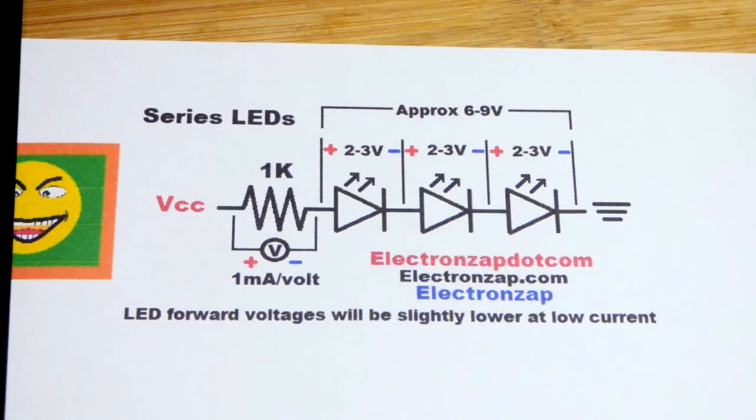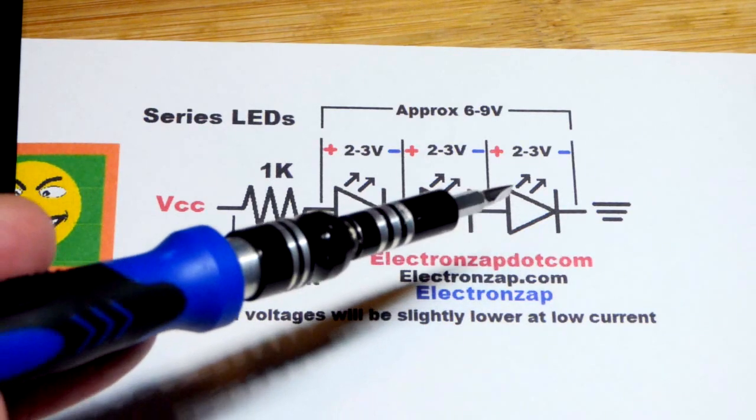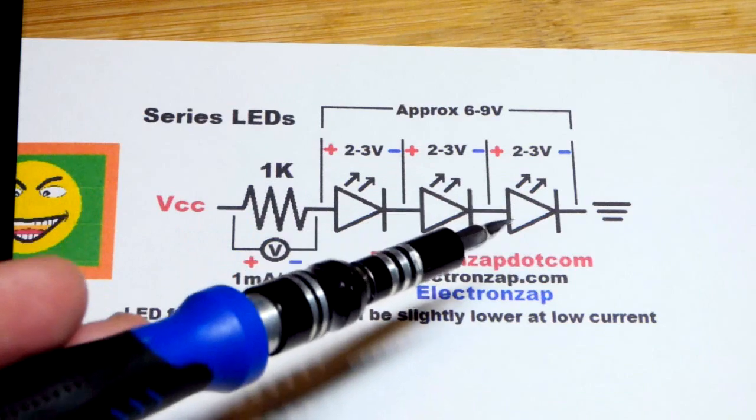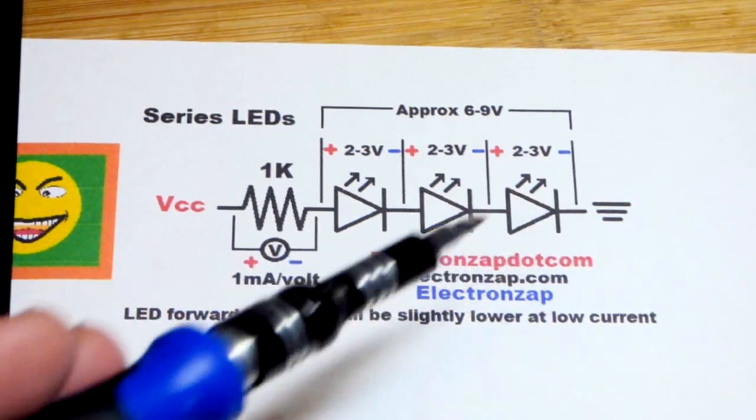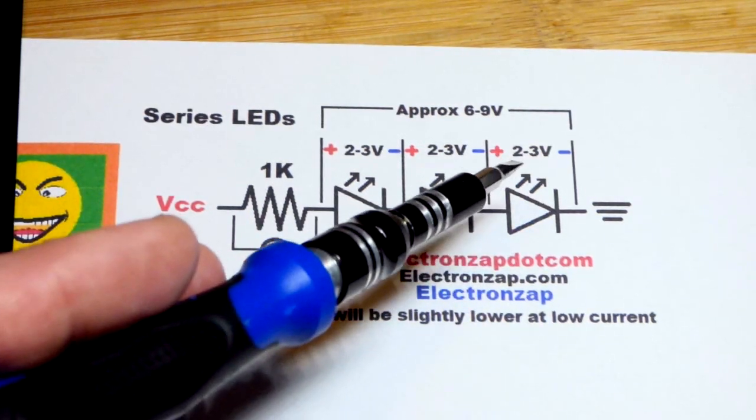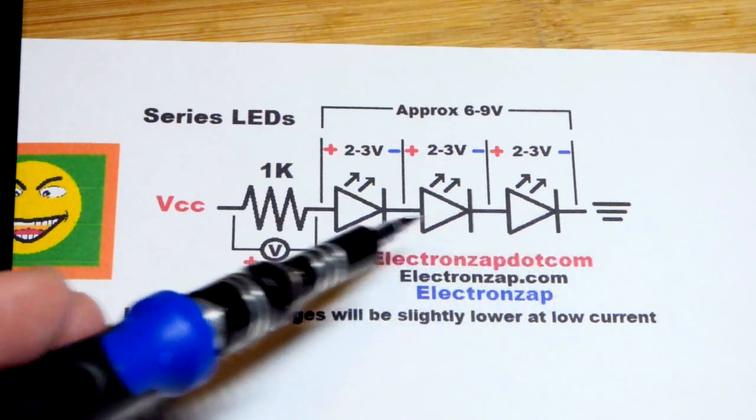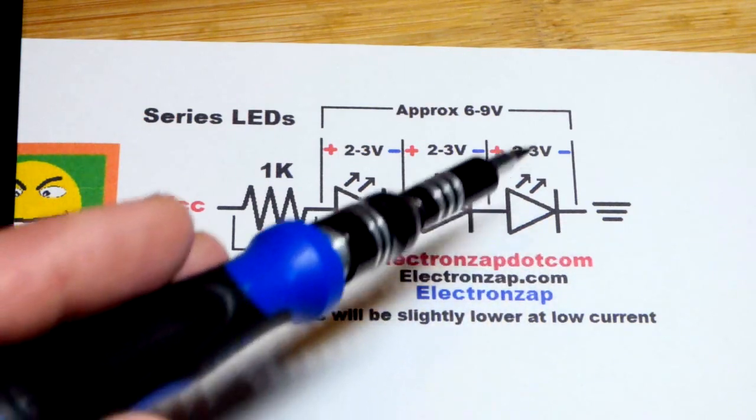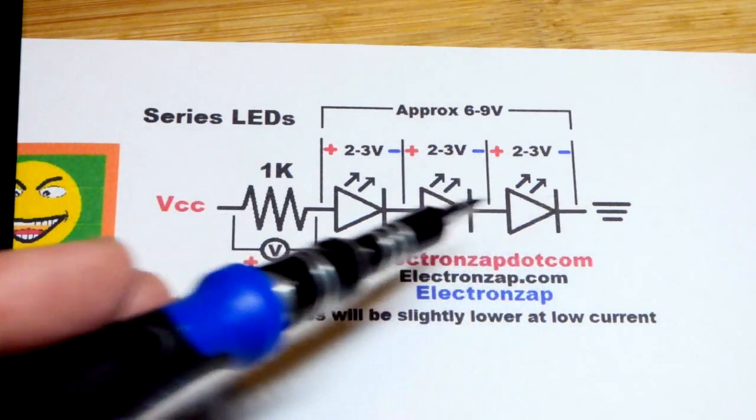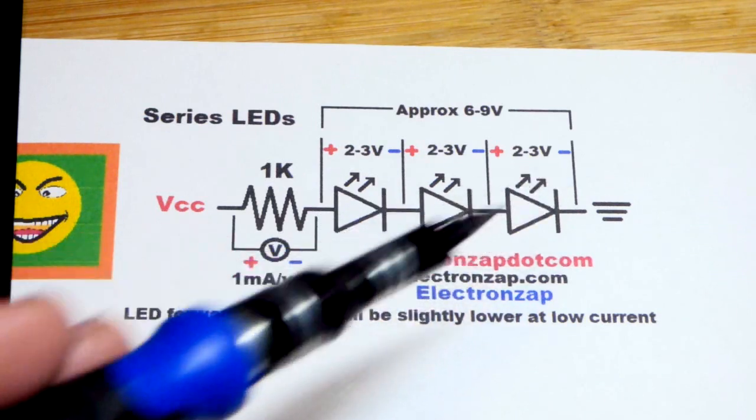When they're forward biased, the direction where they conduct relatively easily, there's a voltage it takes to get the diode to conduct. So for red LEDs that's about 2 volts. If you put two of them in series, their voltages are going to add up. The two of them, it's going to take about 4 volts to start conducting.